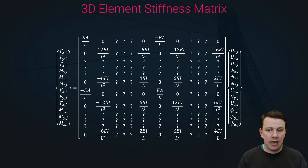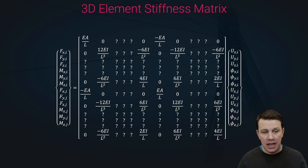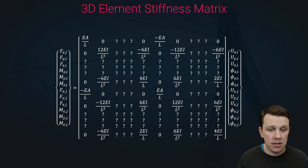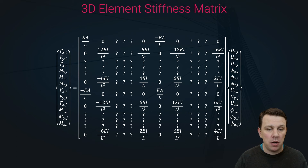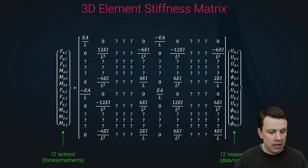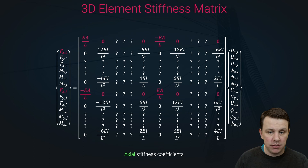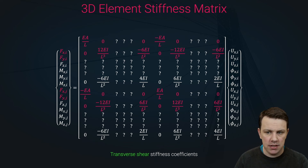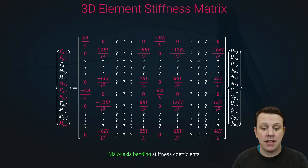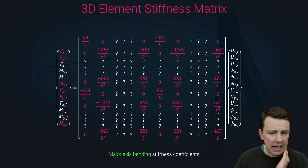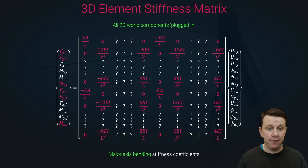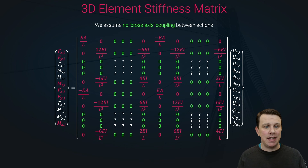Now we focus on the stiffness matrix. A set of forces and moments is related to corresponding displacements and rotations through the stiffness matrix. There are many question marks since we need to determine the stiffness coefficients. What we can already populate are all the stiffness coefficients from our 2D element: the axial stiffness coefficients, the transverse shear coefficients, and what we call the major axis bending stiffness coefficients. These 2D components are plugged directly into the larger 3D stiffness matrix.